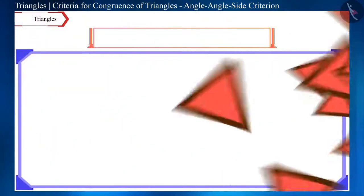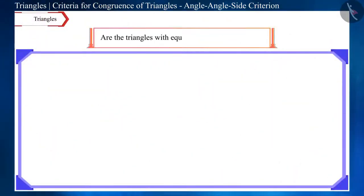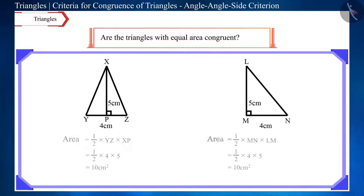Can we say that triangles with equal area are congruent? No. Look at these two triangles. Their areas are equal, but these triangles are not congruent.